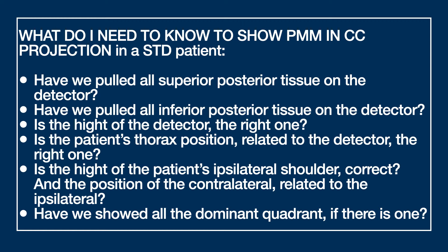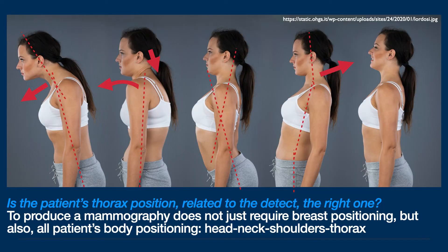In the first video of this series, we addressed the first three questions. Today's lesson is about these others. The thorax position related to the detector is crucial. Just one look at this picture is enough to understand how some kind of patient posture could make the correct breast positioning challenging — especially head, neck, shoulders, and thorax have to be taken into account.